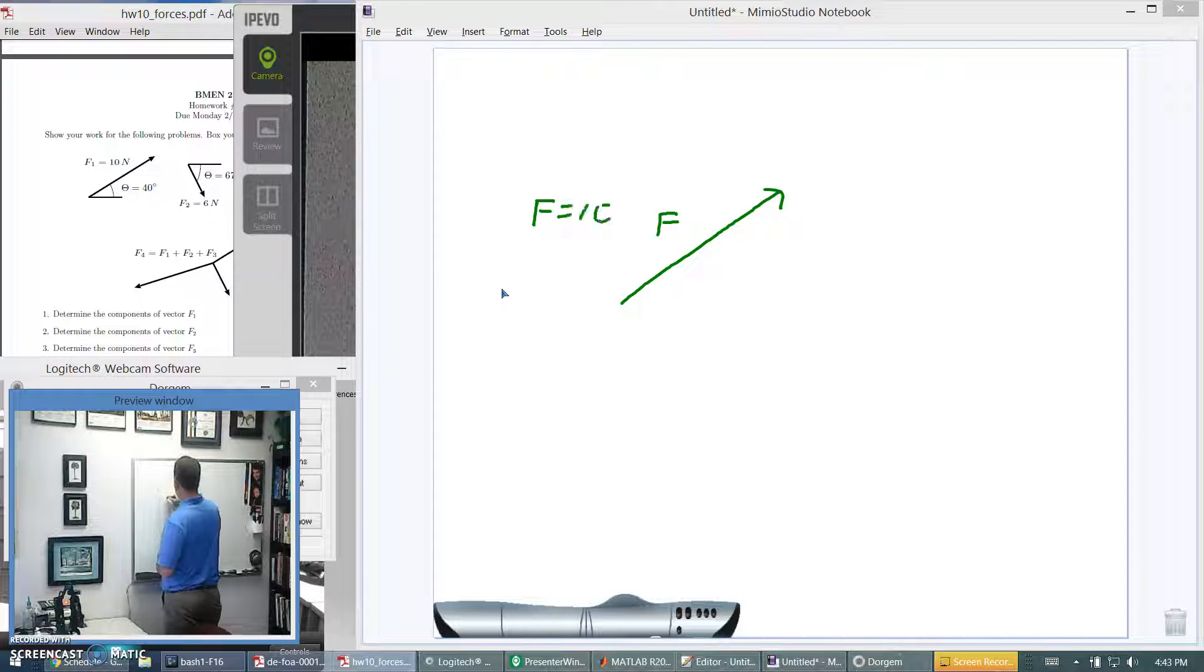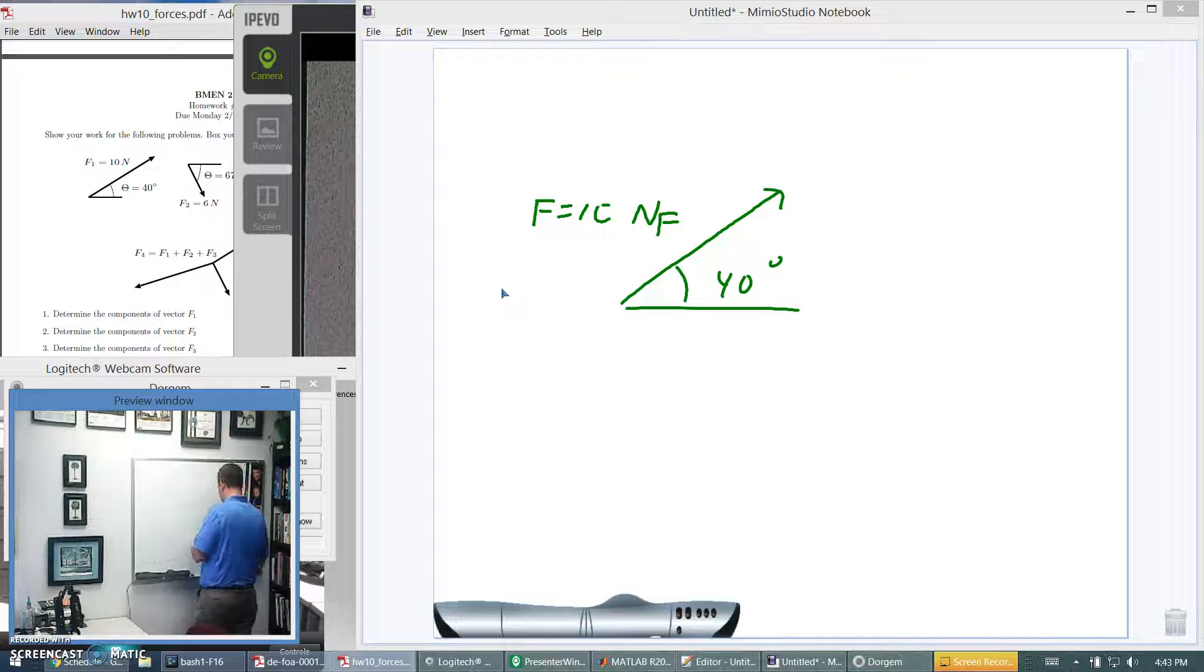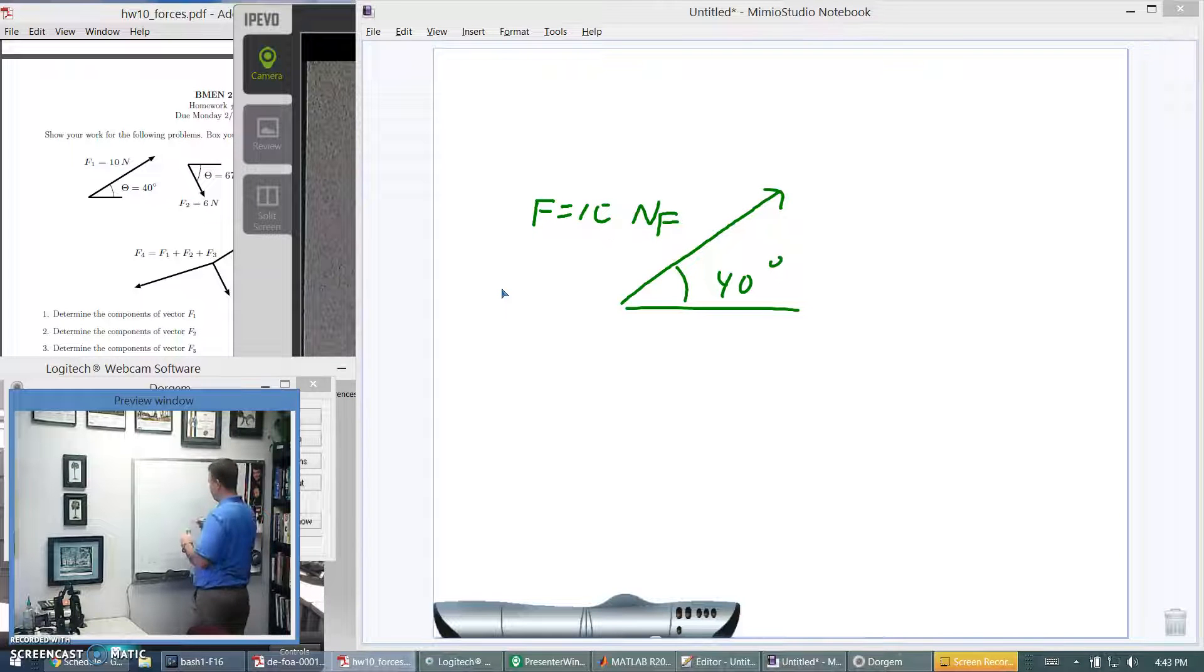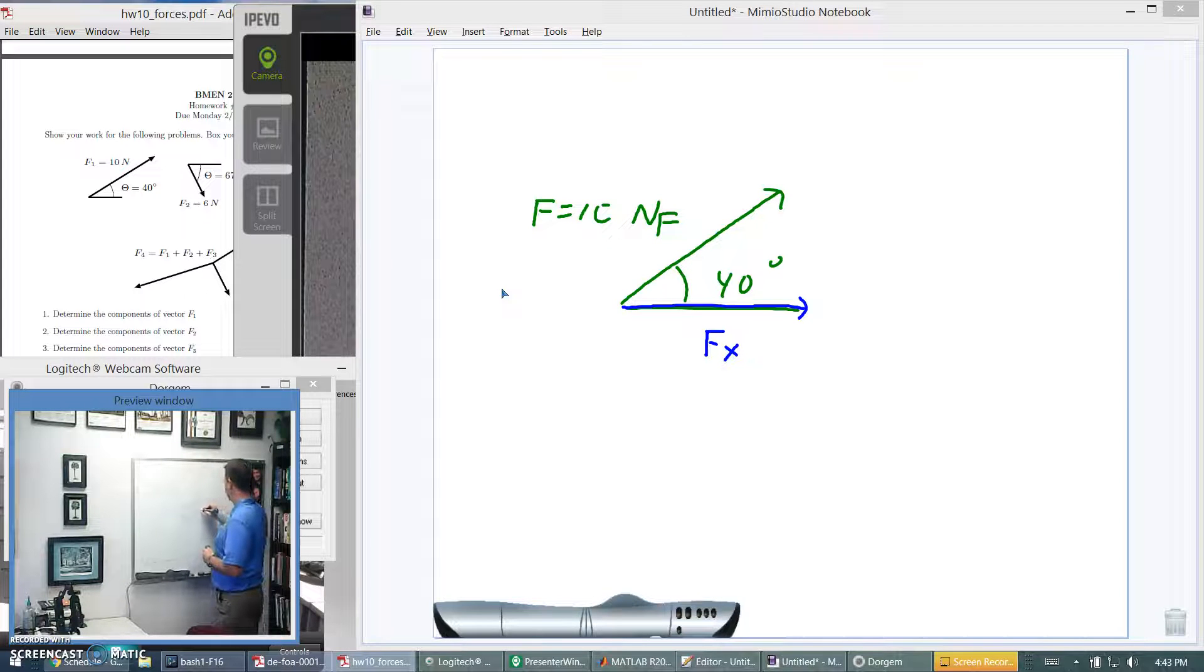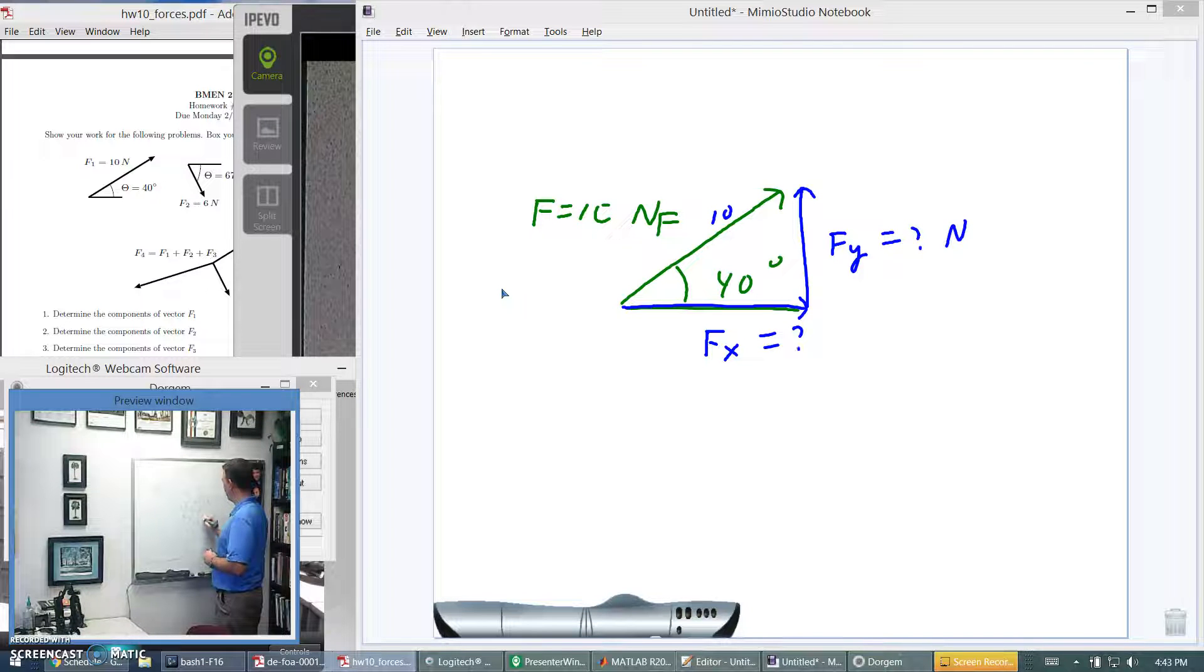So, F equals 10 newtons. This angle is 40 degrees. This part is going to be Fx. Since we add vectors head to tail, this part is Fy. And this hypotenuse is 10 newtons. We have to solve how many newtons here and how many newtons here.